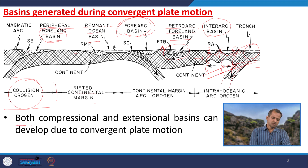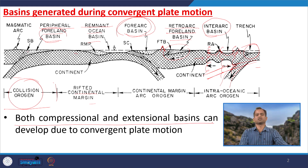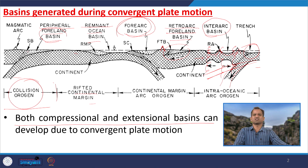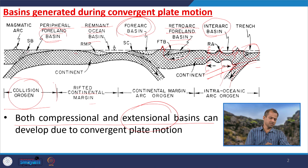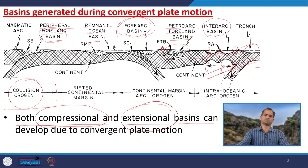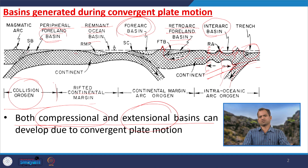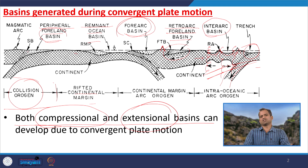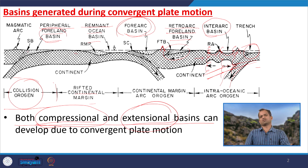Both compressional and extensional basins can be developed at the convergent margin setting. If you recall the sedimentary basins associated with divergent plate margin settings, they are all of extensional nature. However, at convergent margins, compressional sedimentary basins are also associated. Once we have a compressional system, we are squeezing the accumulated sediment, increasing temperature and thickness, and increasing overburden pressure due to thickening — which is why petroleum hydrocarbon can generate more easily.